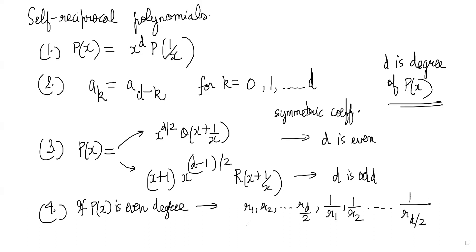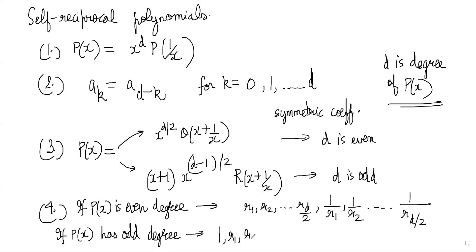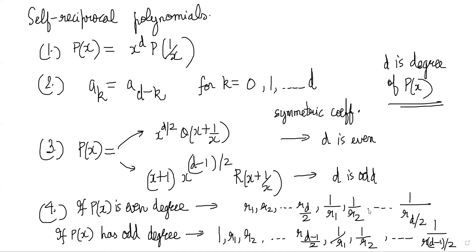For an odd-degree self-reciprocal polynomial, -1 is guaranteed to be a root, and the remaining roots pair up as r_1, ..., r_{(d-1)/2} and 1/r_1, ..., 1/r_{(d-1)/2}. So the roots can always be paired, and in the case of an odd degree polynomial, -1 is guaranteed to be a root.